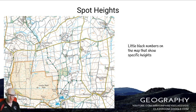The other way we can find heights on a map is by looking at spot heights. These are little black numbers that appear and show certain heights of various features on the map.